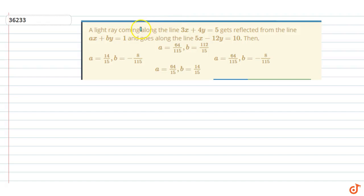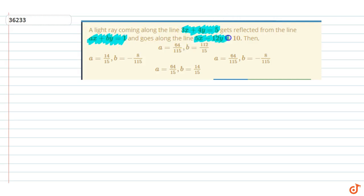The question given is: a light ray coming along the line 3x + 4y = 5 gets reflected from the line ax + by = 1 and goes along the line 5x - 12y = 10. We have to find the values of a and b.